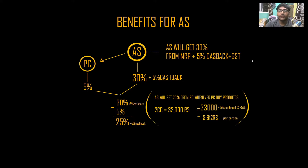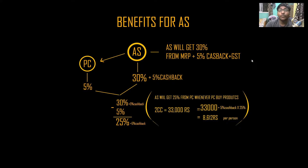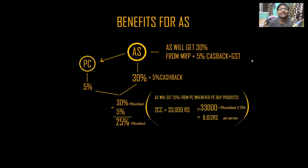So you understand how big the discount is here? If you bought a product worth 1000 rupees, after 30% discount it's 700 rupees, and after the 5% cashback it comes to 645 rupees effectively. You can buy it in retail at 700 rupees, or use it yourself. That is your personal saving as an AS member.